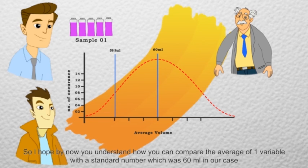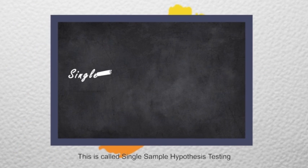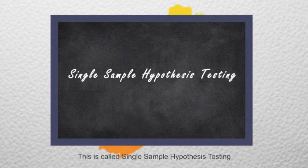So I hope by now you understand how you can compare the average of one variable with a standard number which was 60 ml in our case. This is called single sample hypothesis testing.